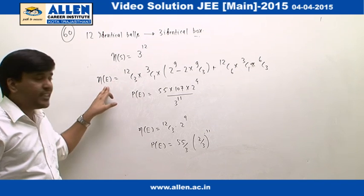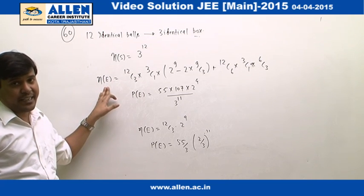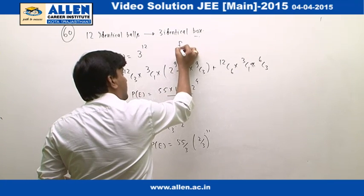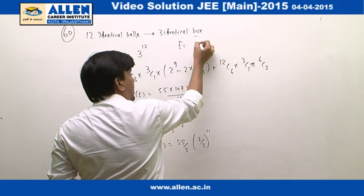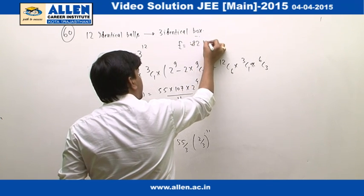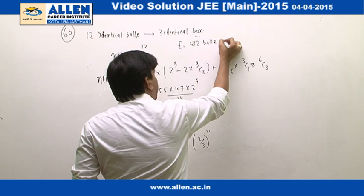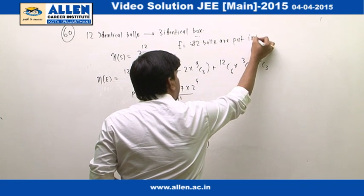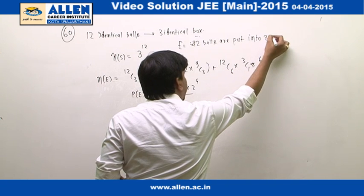Now, if we are calculating the number of elements in the required event E, where E is referred as the event such that the 12 balls are put into 3 identical boxes.